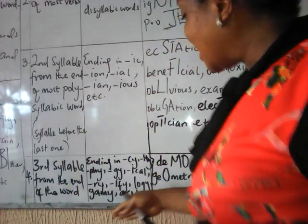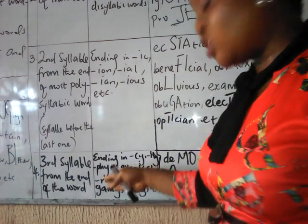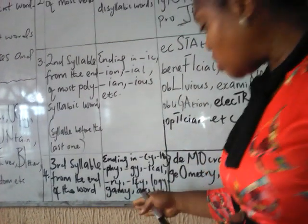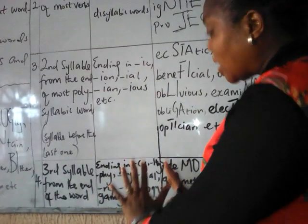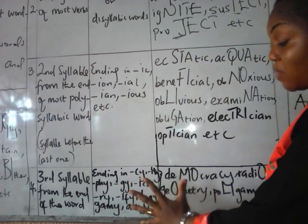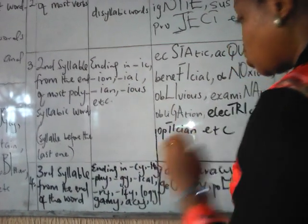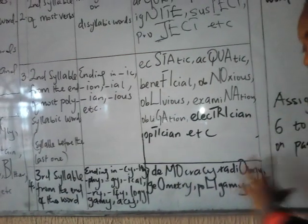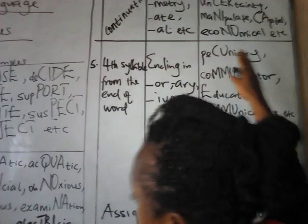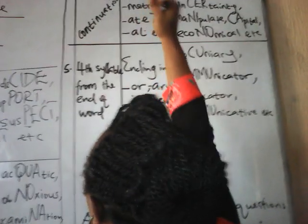Words ending in -CY, -ITY, -PHY, -GY, -ICAL, -RY, -IFY, -LOGY, -GANY, -ACY, and so on mostly have their stress on the third syllable from behind. Examples include: democracy, radiology, geometry, polygamy, uncertainty, manipulate, capital, economical. Such endings can also include -METRY, -ATE, and -AL.